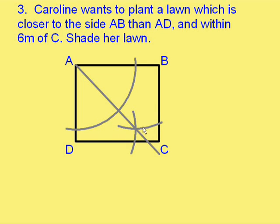Now, we join A to the intersection of those two small arcs, and we have an angle bisector making these two angles equal. And every point on this line is the same distance from AB as it is from AD.